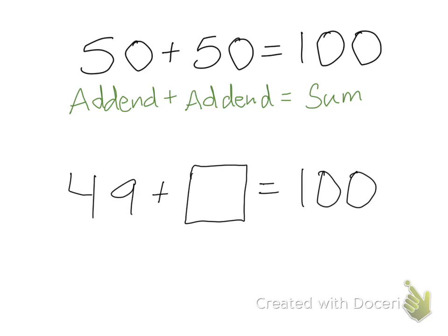So, 50 plus 50 equals 100, and we call this a double because the numbers are the same. Each of these 50s is called an addend. Addends are the numbers we add to equal the total, and the total is always called the sum. So we have an addend plus an addend equals a sum.